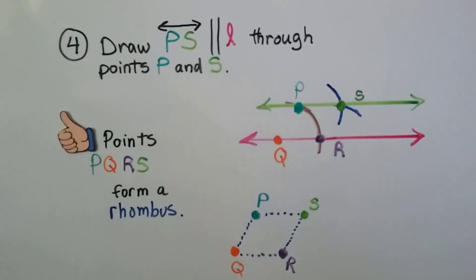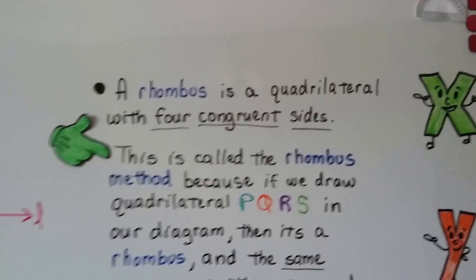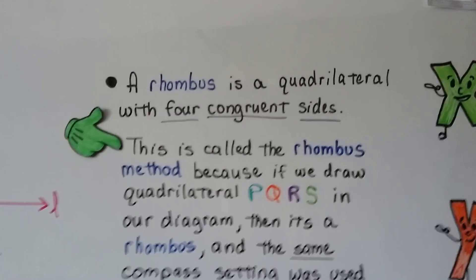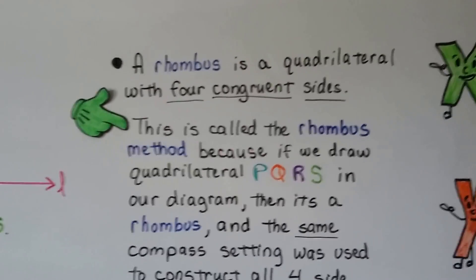P, Q, R, S. We have a rhombus there. A rhombus is a quadrilateral with four congruent sides. So just like a square, all the sides are the same length. That's four congruent sides.